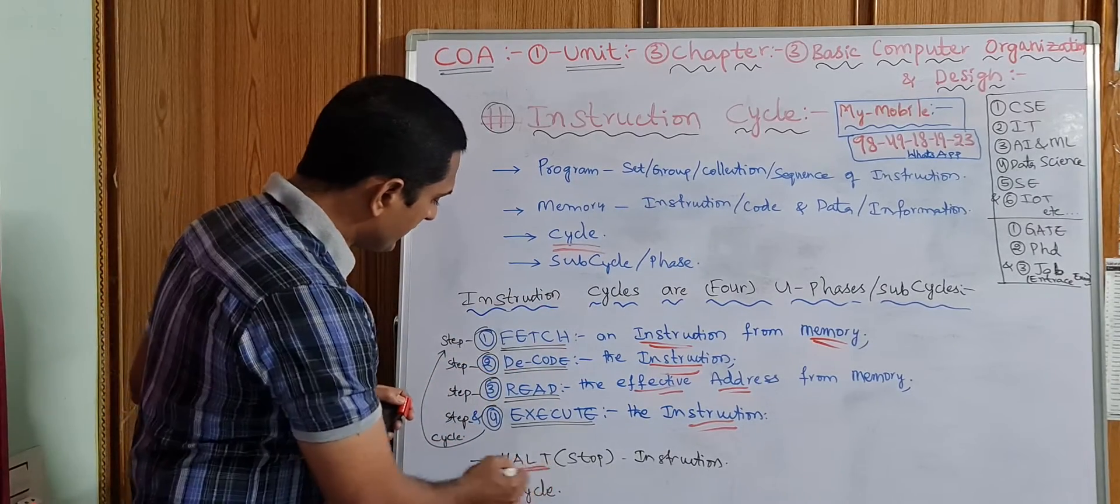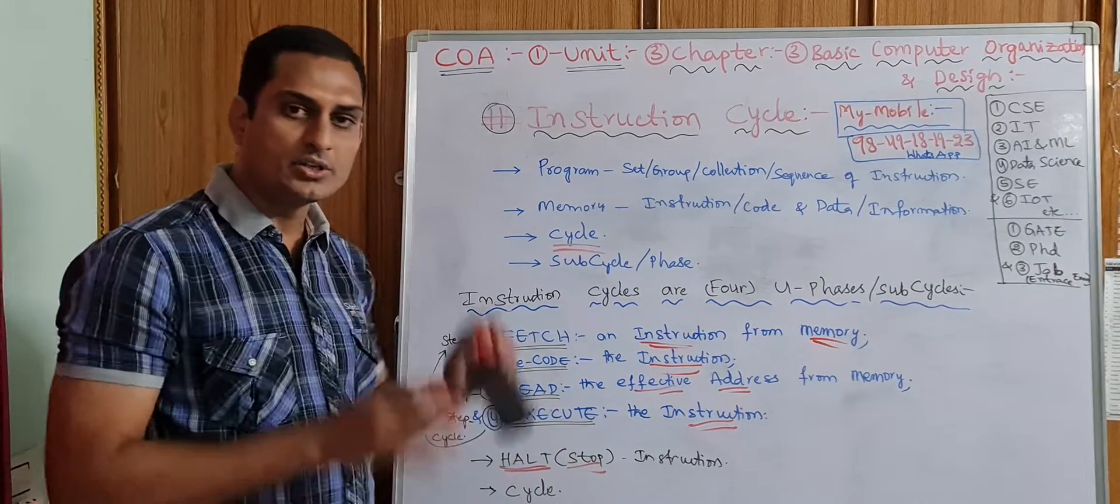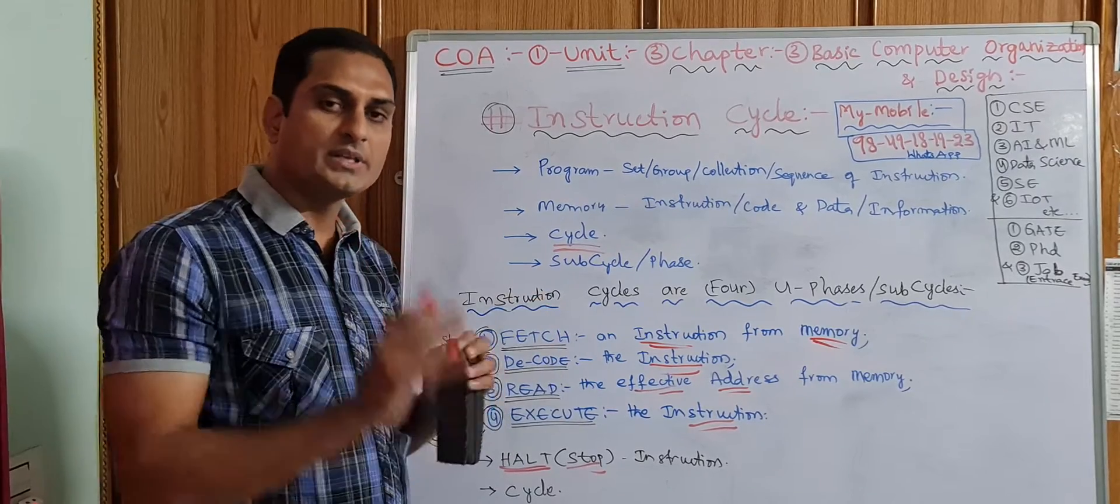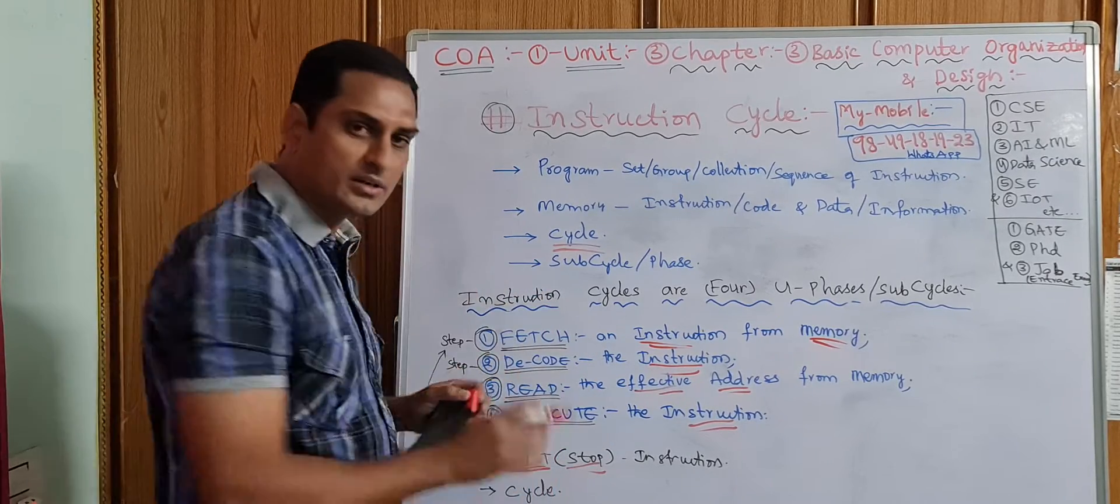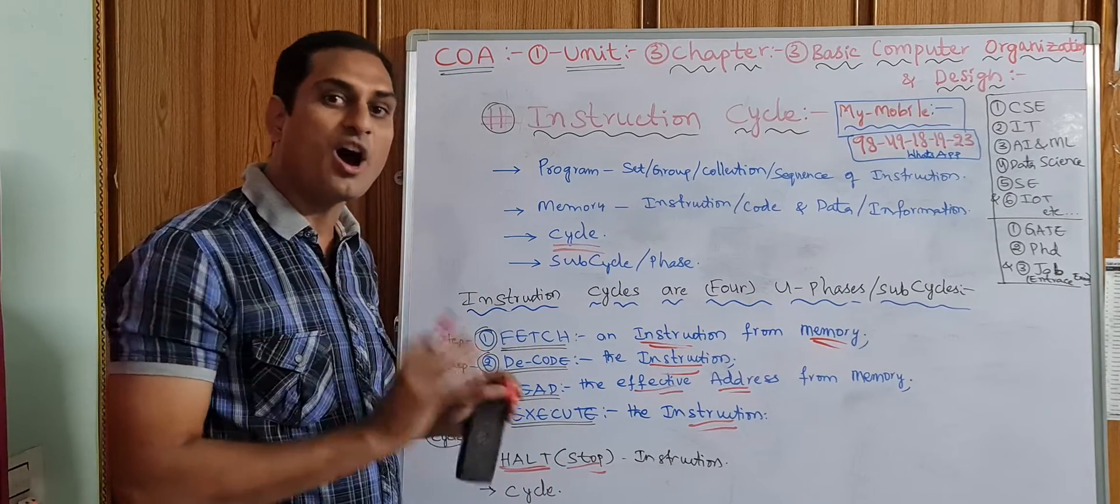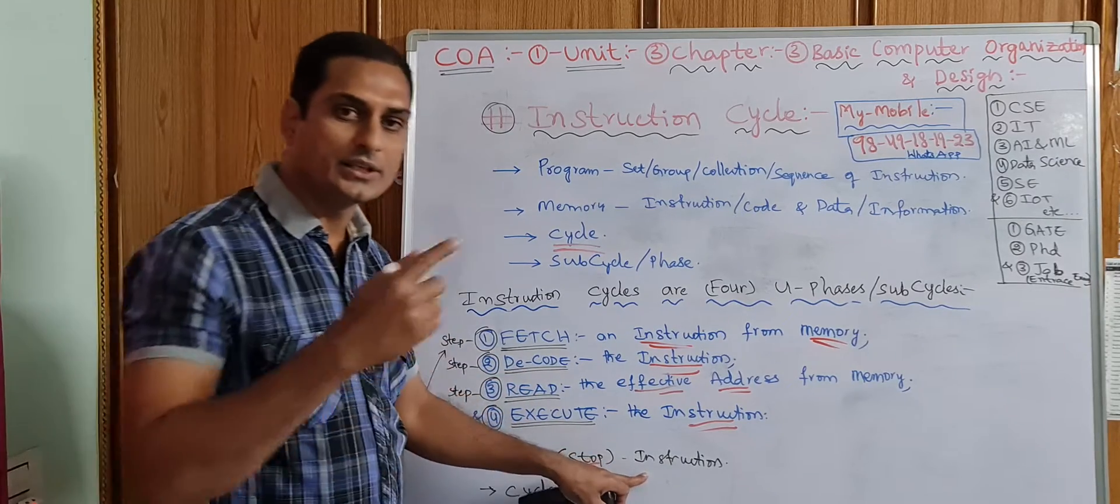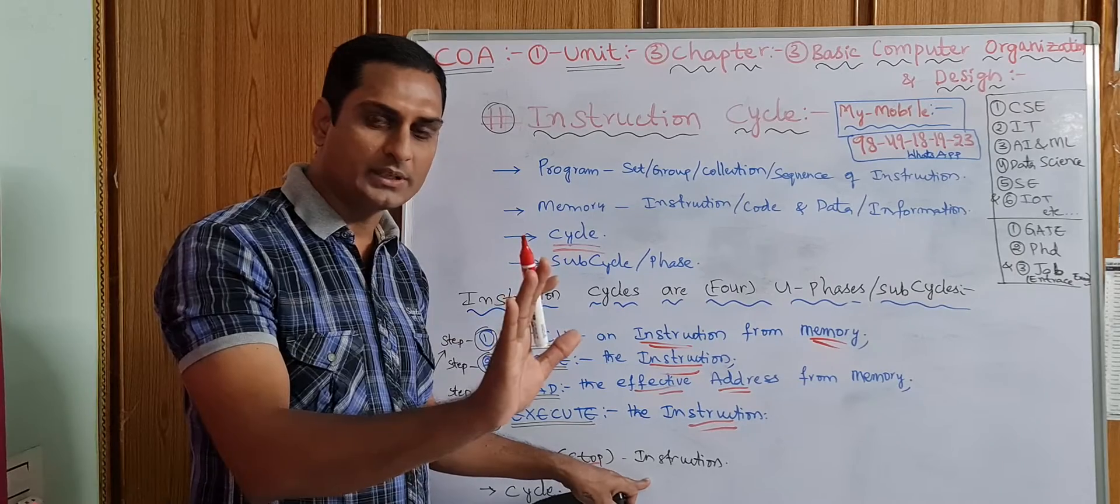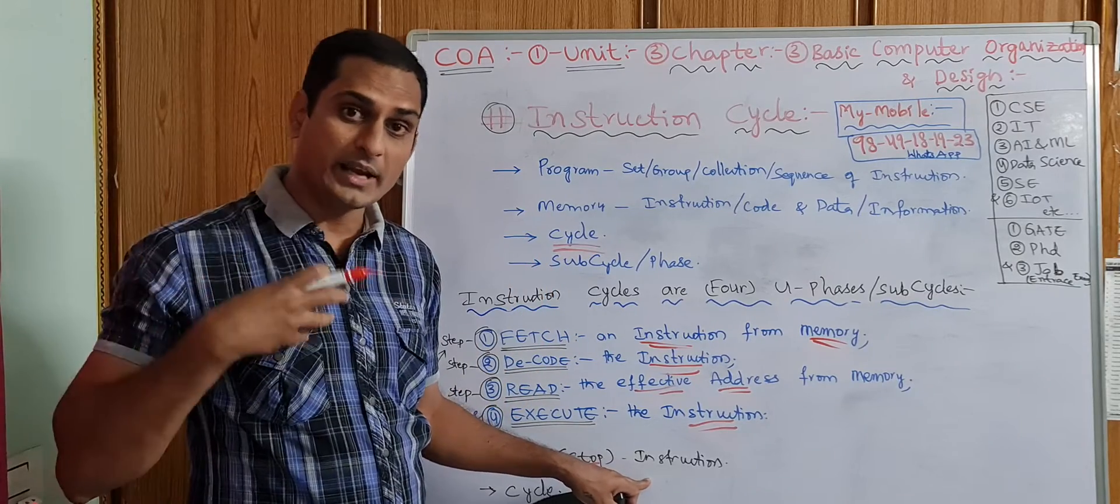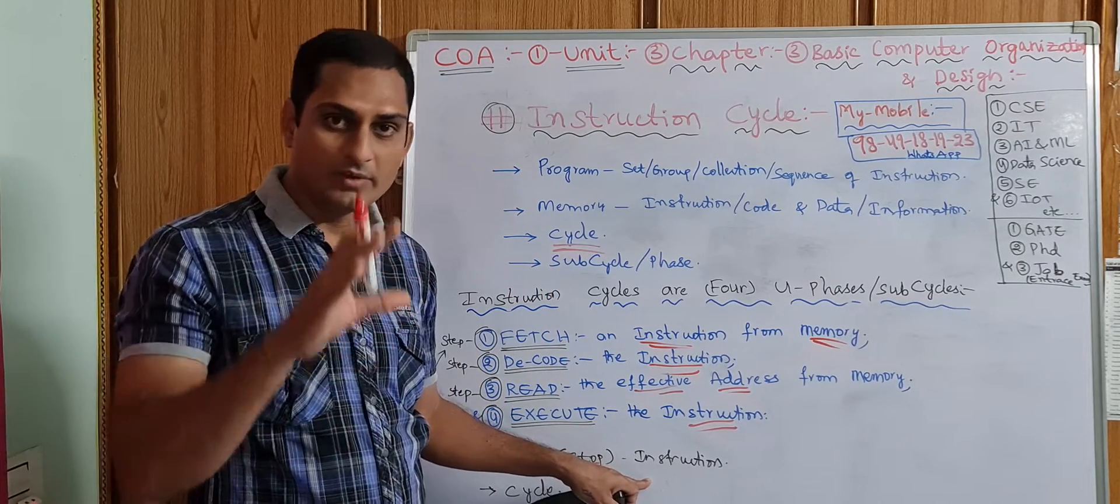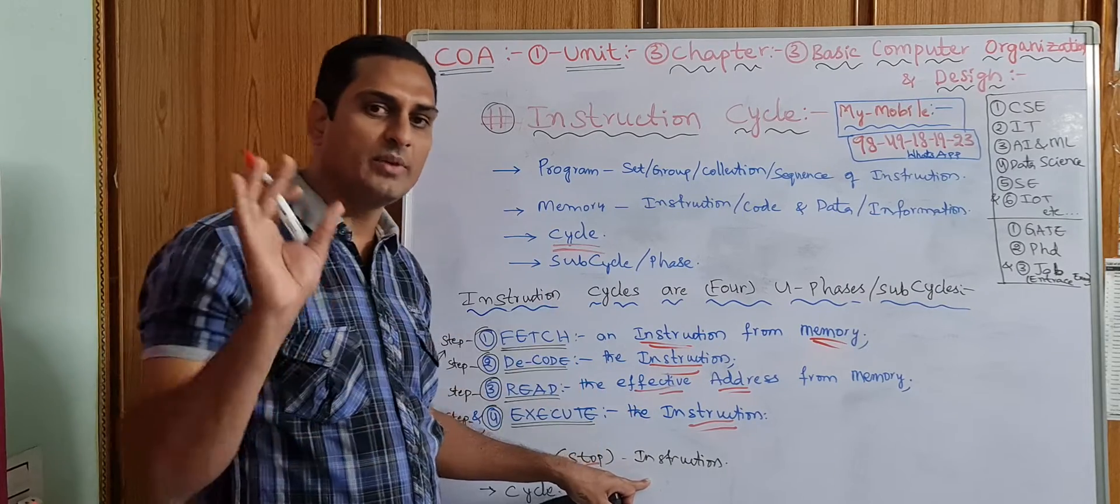Execute: execute the instruction. So it will be repeated. It is called cycle. When will it be stopped? A halt statement, a halt instruction. When a halt instruction is executed, then it will be stopped, the cycle. Then the complete task of the end user who sits in front of the computer will be fulfilled. The cycle will be stopped when halt instruction is executed.